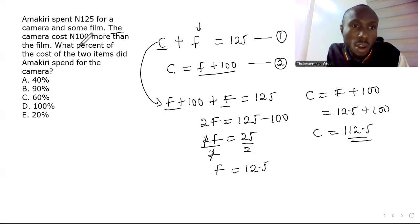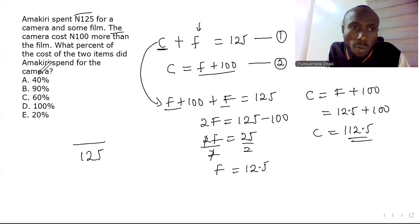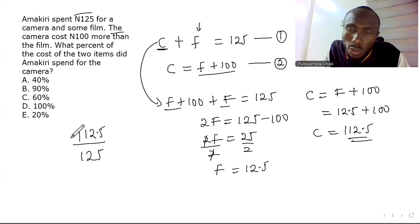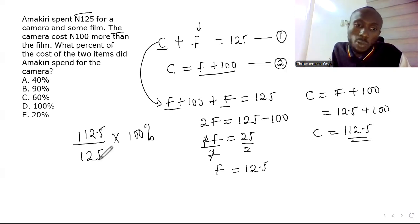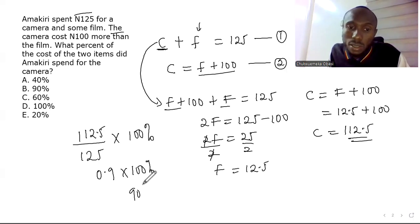The question asks: what percent of the total cost of the two items (125 naira) did she spend on the camera (112.5 naira)? We compute 112.5 / 125 × 100 = 0.9 × 100 = 90%. The answer is B.